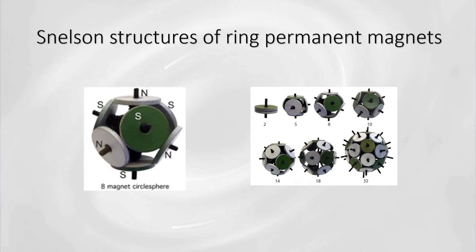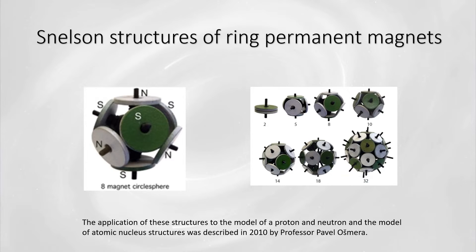In 1982, Kenneth Snelson presented his visualization of the electron structure of the atom at an exhibition hosted by the Association of Scientific and Technological Centers. This presentation included a demonstration of structures created using ring-shaped permanent magnets. The application of these structures to model protons and neutrons and the atomic nucleus structure was described by Professor Pavel Osmera in 2010.